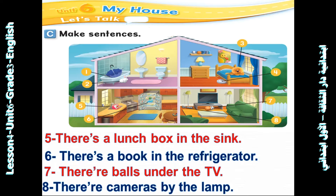Now you can repeat after me. Number five: There is a lunch box in the sink. Number six: There is a mop in the refrigerator. Number seven: There are poles under the TV. Number eight: There are cameras by the lamp.